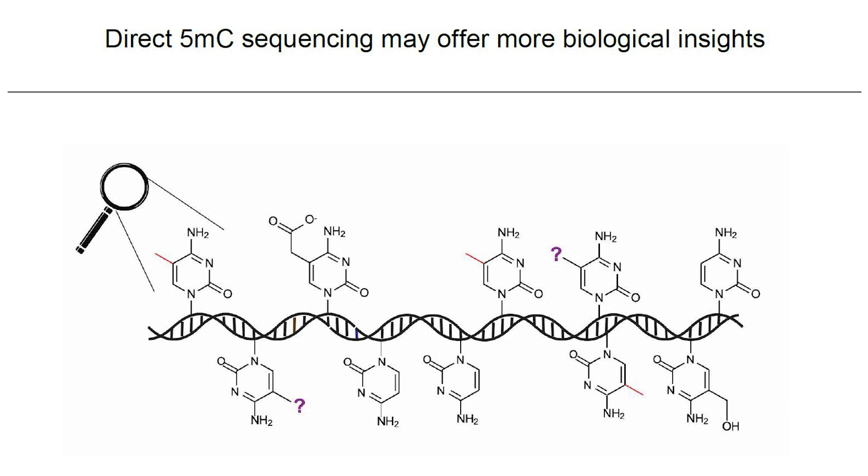What we've demonstrated is that by permuting natural and engineered DNA-modifying enzymes, we now have methods that can allow for the precise and non-destructive mapping of either 5-hydroxymethylcytosine through our method ACEseq, or now 5-methylcytosine, the most important epigenetic mark in mammalian genomes, through our new DM-seq method.